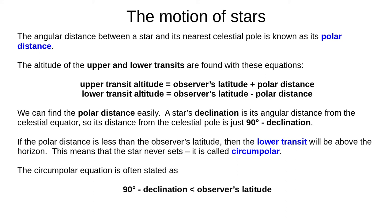Some stars never set from a certain latitude. If the polar distance is less than your latitude, the lower transit is above the horizon. The star never sets, and it is called circumpolar. We usually use the circumpolar equation: a star is circumpolar if 90 degrees minus the star's declination is less than the observer's latitude.